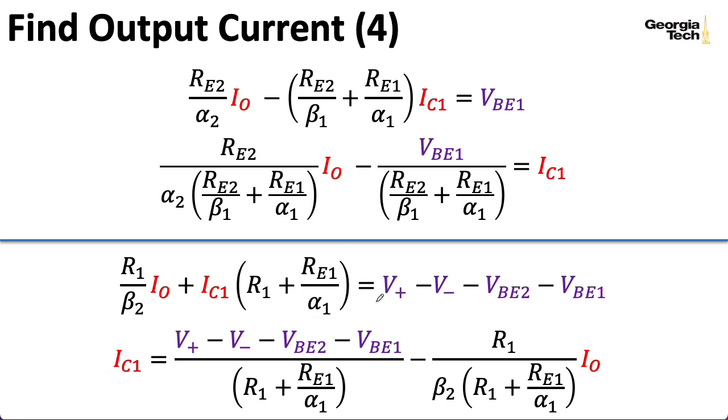All right. So, let's see. I have R1 over beta2 over here and then divided by that quantity. I have all my voltage stuff divided by that quantity. When I divide by that quantity here, I get IC1 by itself. And let's see. V plus minus V minus minus all this V stuff. That keeps the same sign. But the IO term here, when I move it over to the right-hand side, gets a minus sign. Again, let me know if you see a problem with my algebra.